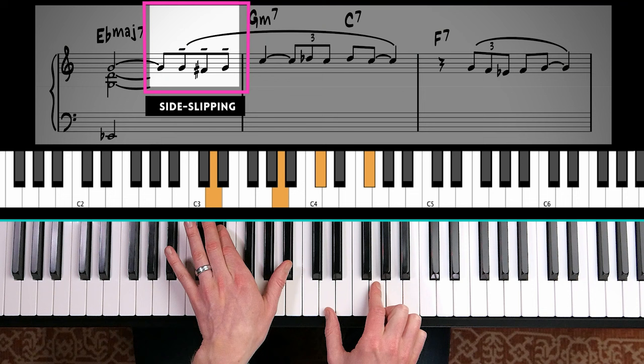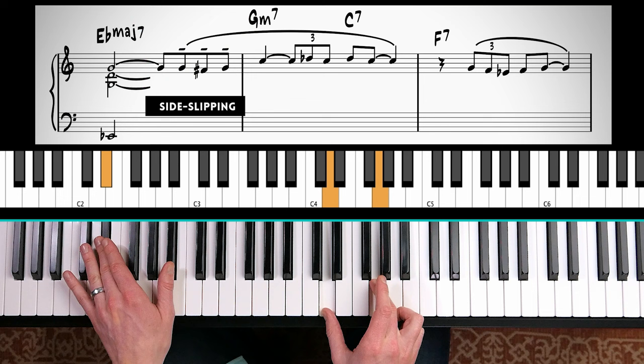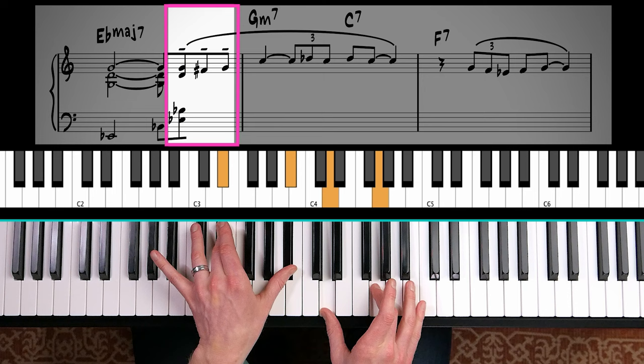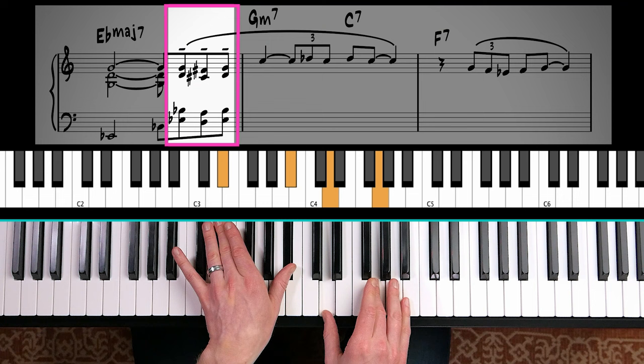Like this. So we have an E flat major seven chord. I'd like to just play an open chord voicing, root, fifth, seventh, third. And just shift it down to D major seven and back.